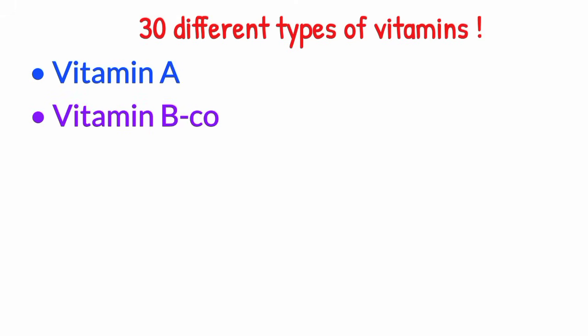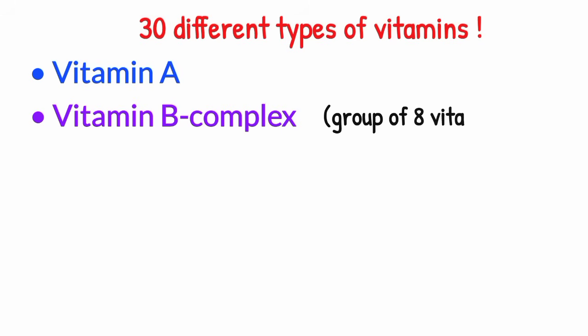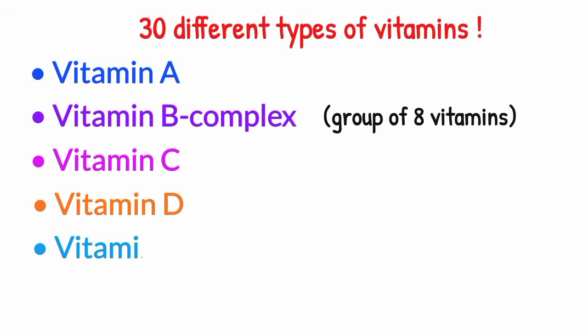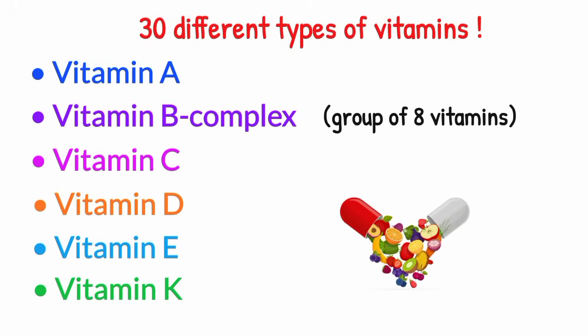There are 30 different types of vitamins which includes vitamin A, vitamin B complex which is basically a group of eight vitamins, vitamin C, vitamin D, vitamin E, and vitamin K. Now, let's discuss them one by one.